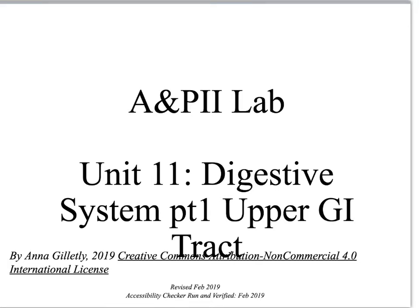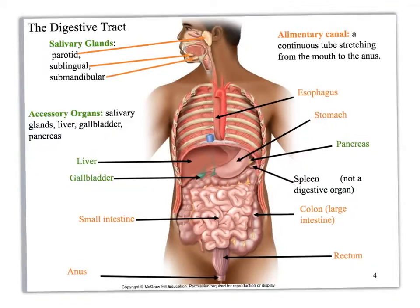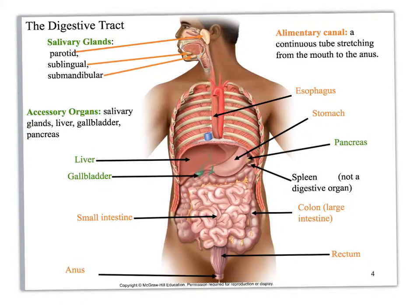Welcome, this is Anna and we are going to be looking at part one of unit 11, where we're going to look at the upper GI tract of the digestive system. Looking at the entire digestive tract, we're going to divide it into the alimentary canal and the accessory organs. The alimentary canal is a tube that goes from mouth to anus — one continuous tube, although the epithelial tissues are going to change, and so will some of the structures of the supportive connective tissues in response to the particular function of that part of the tube.